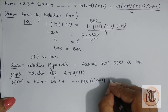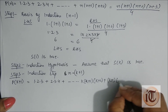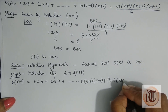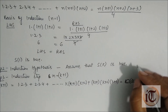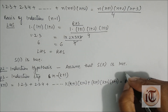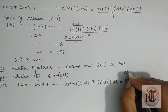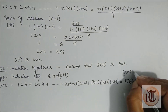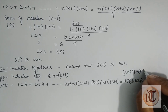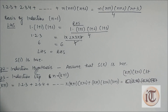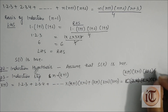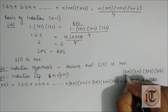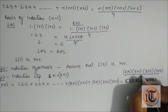Substituting n = K+1 into the right hand side, this becomes (K+1)(K+2)(K+3)(K+4)/4.